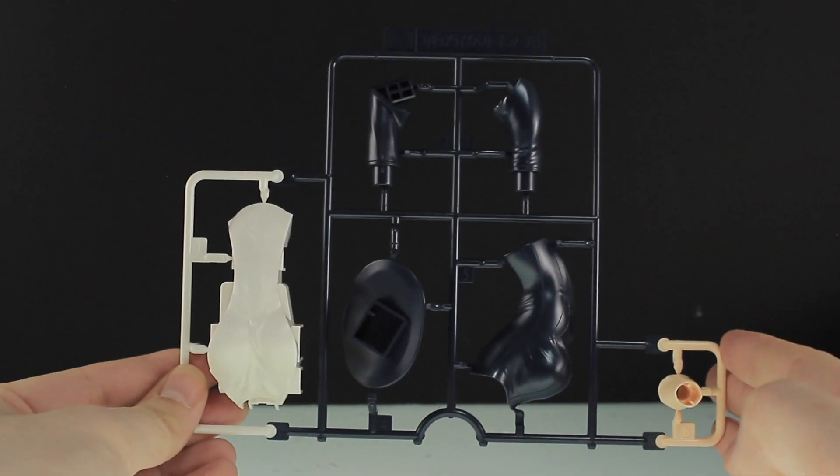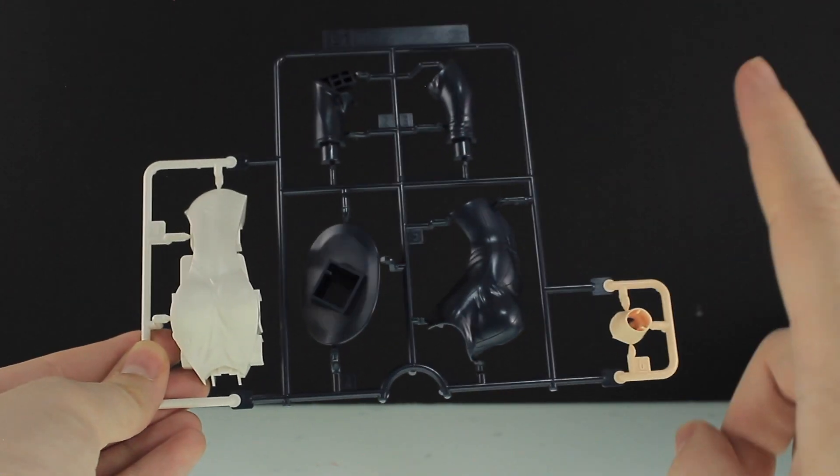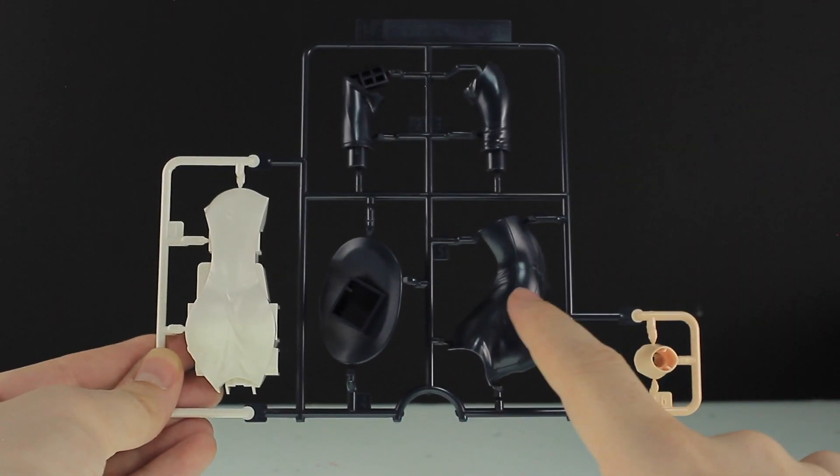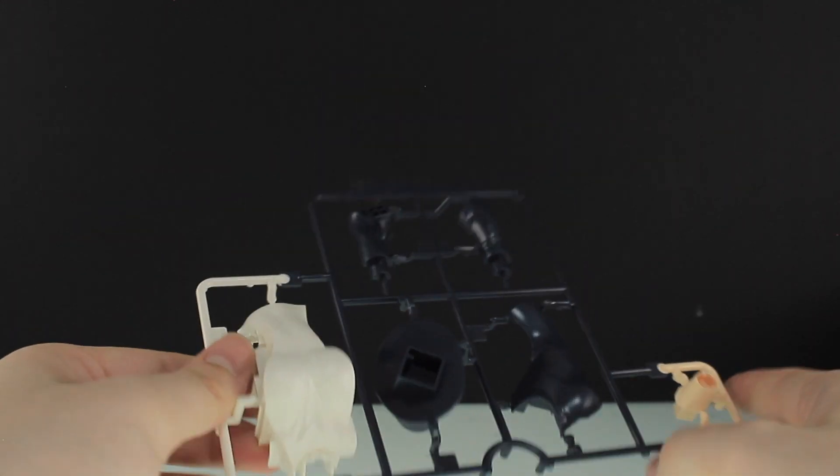The last runner in here then is E1, again brand new for this kit and a multicolored runner. We've got the neck over here, the dark navy blue sections of the body as well as a white section of the body there. And that is all there is for runners.